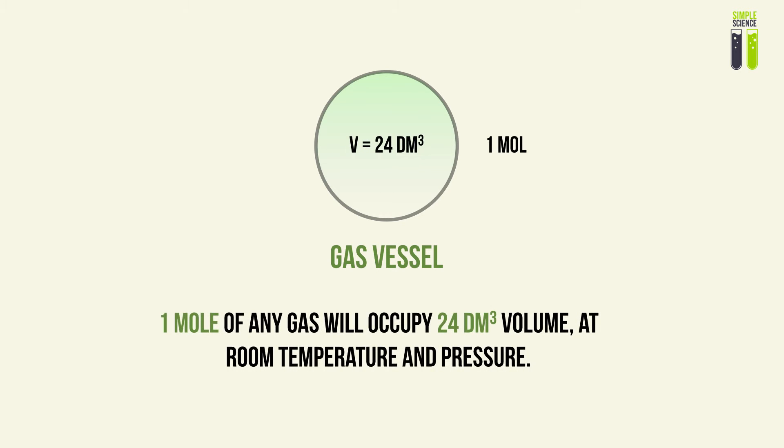The basic assumption for any particular gas at room temperature and pressure that we can use in IGCSE-level stoichiometry is that one mole of any gas will occupy 24 decimeters cubed of volume. So for any particular gas, we assume at room temperature and pressure, one mole of that gas will occupy 24 dm³.